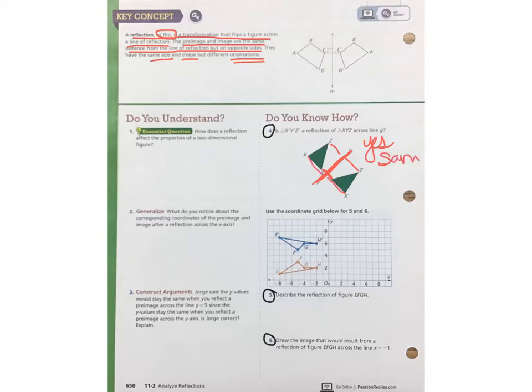So it is the same shape and it is the same size, and they are on opposite sides of line G.